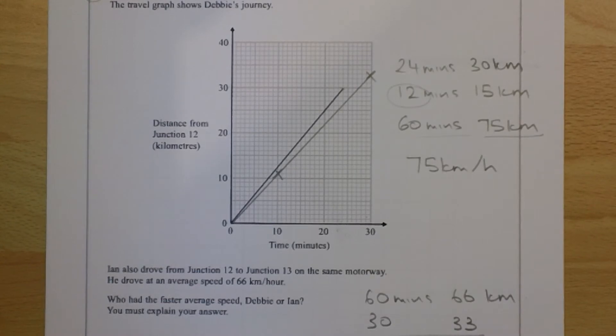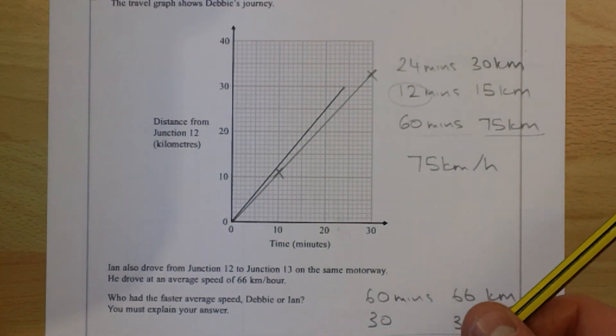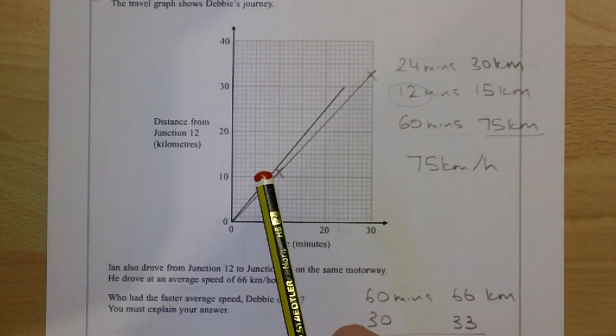So who had the faster average speed? Again, Debbie has the faster average speed. If you're going to use this approach, then you have to explain that Debbie has a faster average speed because her line is steeper.